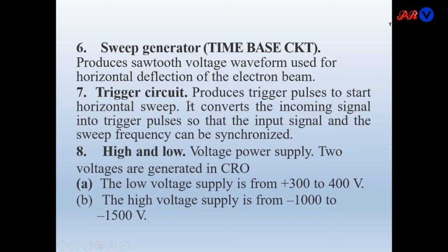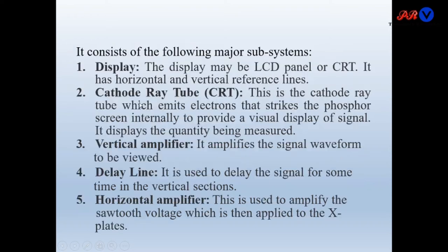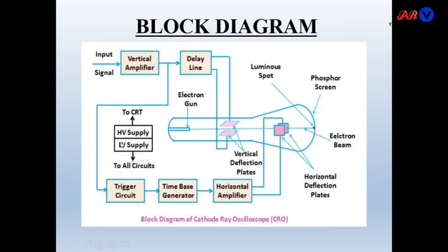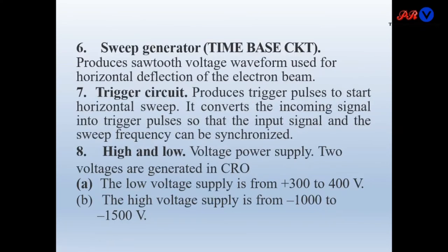Trigger circuit produces trigger pulses to start the horizontal sweep. This trigger circuit is used to produce the horizontal sweep voltages. It converts the incoming signal into trigger pulses so that the input signal and the sweep frequency can be synchronized. This input signal and sweep frequency must be synchronized, and it is synchronized by this trigger circuit.